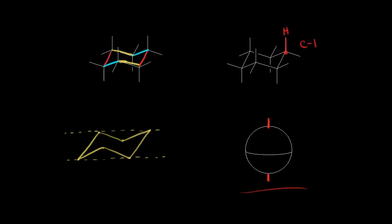Next we go to carbon two, and straight down would be an axial hydrogen. Carbon three is straight up for an axial hydrogen. Carbon four is straight down. Carbon five back here would be up, and then carbon six would be down. So you can see that we alternate — if we start at carbon one, we start with axial up. So let's go ahead and put in the axial hydrogens on our cyclohexane chair conformation.